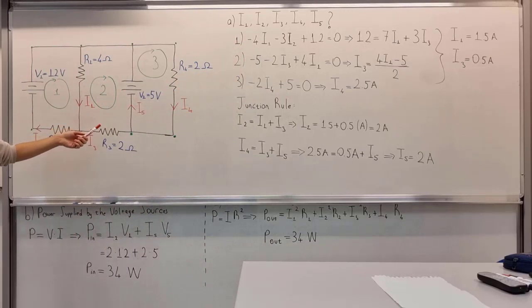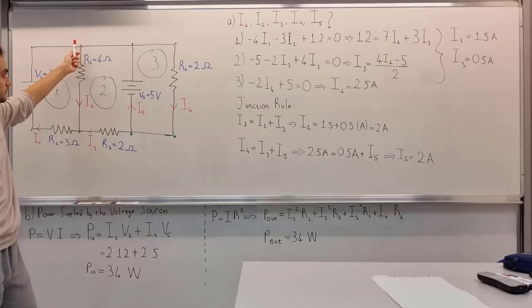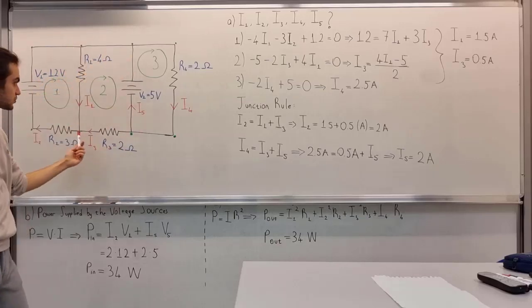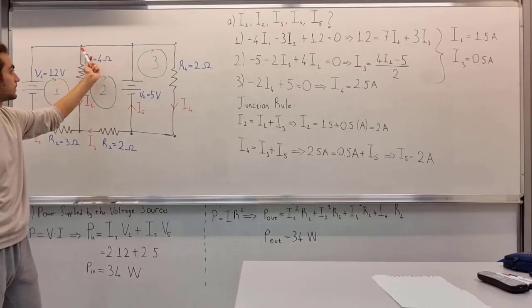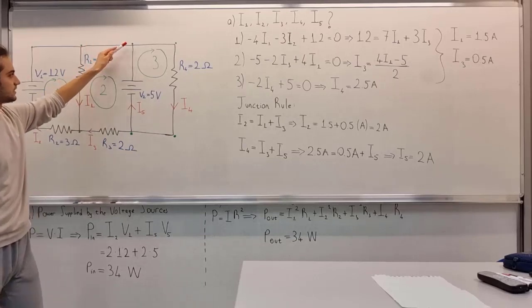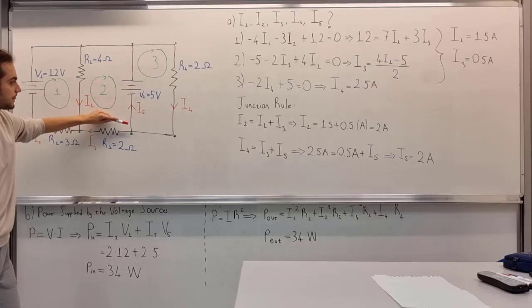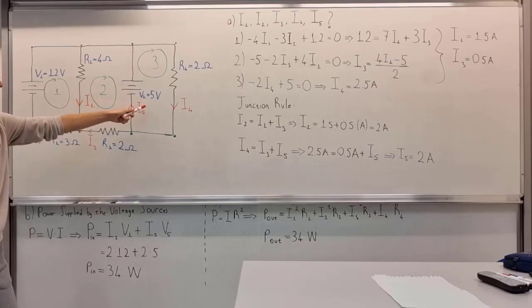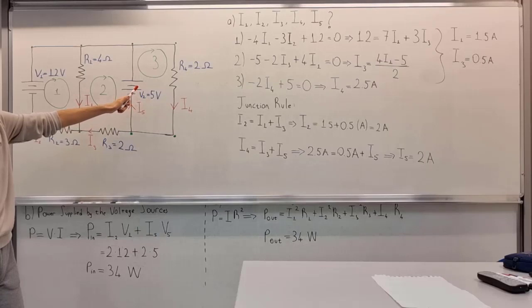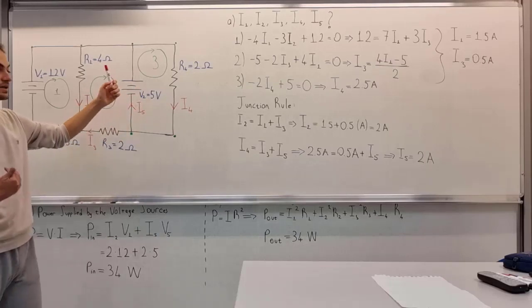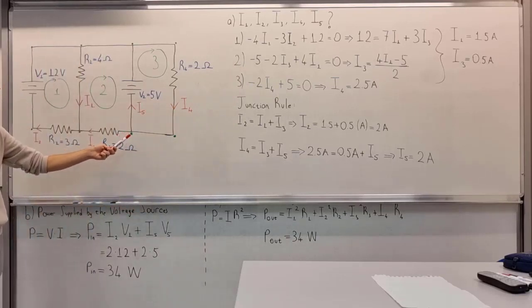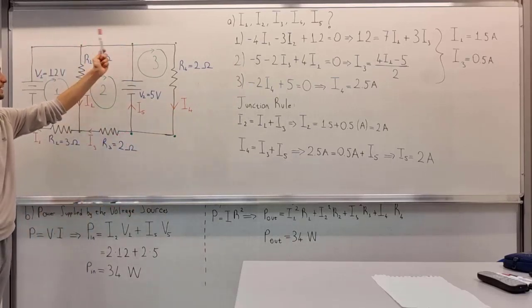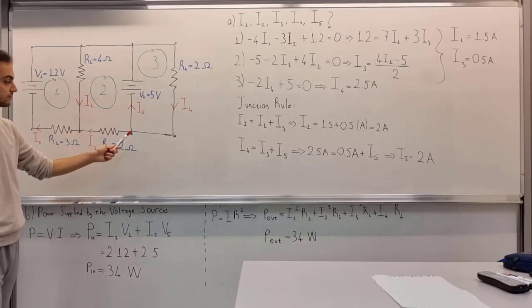The second loop equation: this is point A, I'm still going in the clockwise direction. Here we have nothing. Here, while going from here, our voltage source is in the opposite direction, so it comes with a minus sign. From C to D, we see that we have a resistor,